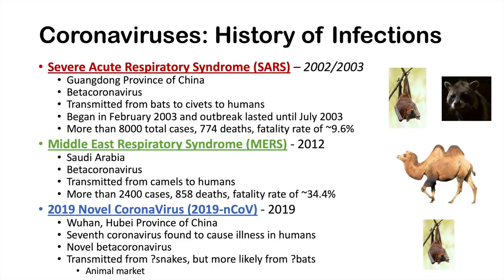As of the recording of this lesson, there are more than 10,000 cases of this Wuhan coronavirus, surpassing the total case count of SARS. Fortunately, the fatality rate is lower than SARS, at approximately two to three percent at this point.